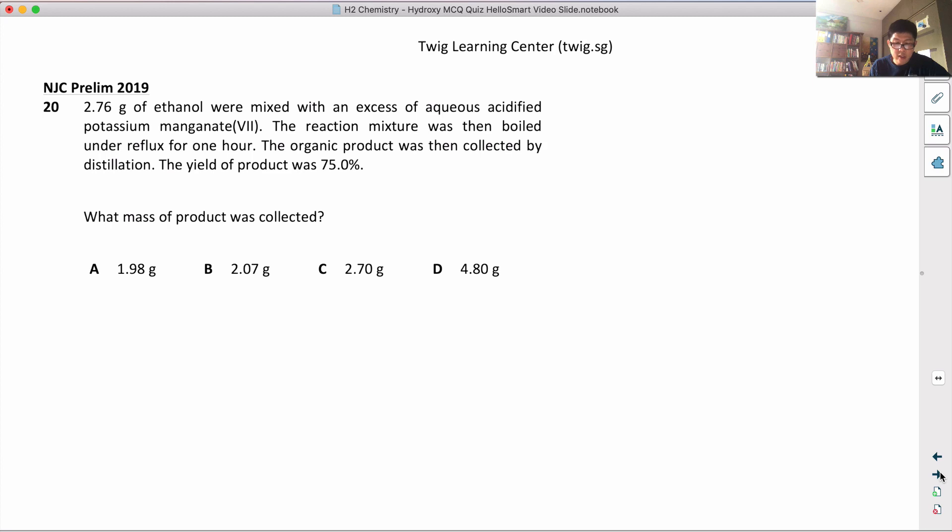The yield of the product was 75%. So alcohol mixed with excess acidified potassium manganate and then boiled under reflux.